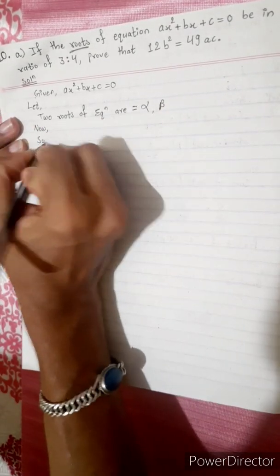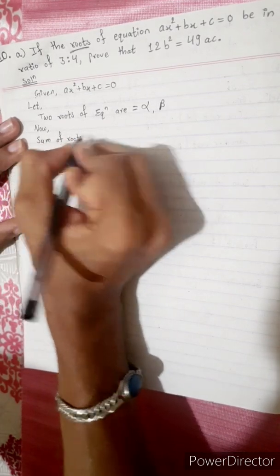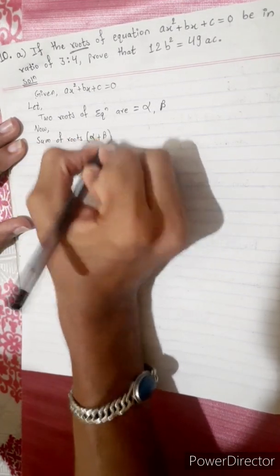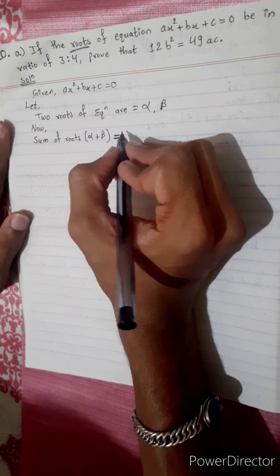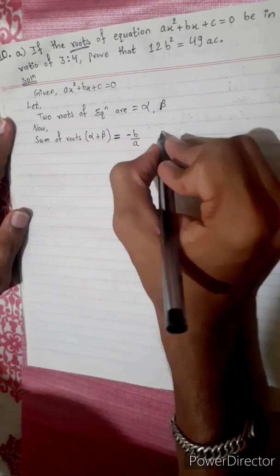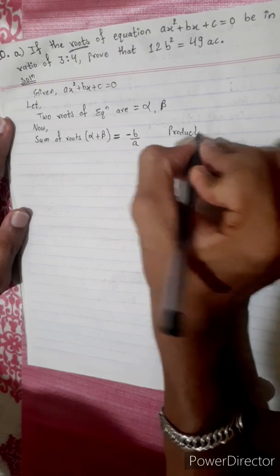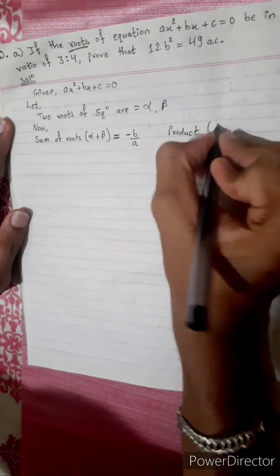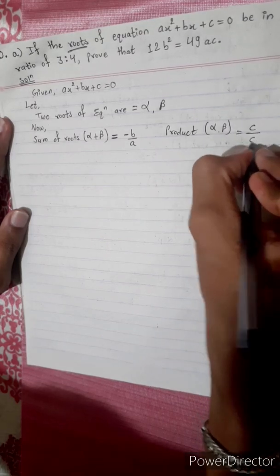The product of roots is alpha into beta. The sum of roots: alpha plus beta equals minus b by a. The product of roots: alpha into beta equals c by a.